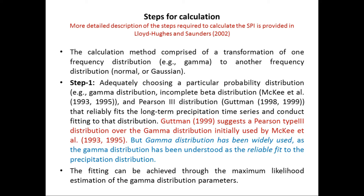More detailed descriptions of the steps required to calculate SPI are provided by Lloyd-Hughes and Saunders in 2002. The calculation method comprises a transformation of one frequency distribution — which may be gamma or Pearson Type 3 — to another frequency distribution, which is the normal or Gaussian distribution. The first step is adequately choosing a probability distribution: gamma, incomplete beta, or Pearson Type 3.